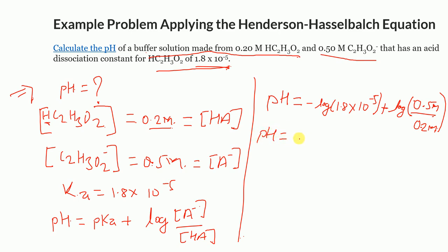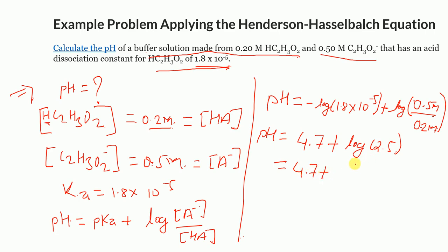−log(1.8 × 10⁻⁵) = 4.7, and log(0.5 / 0.2) = log(2.5) = 0.4. Therefore, pH = 4.7 + 0.4 = 5.1.